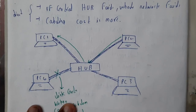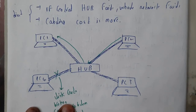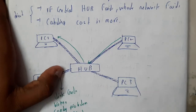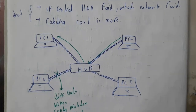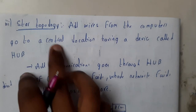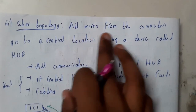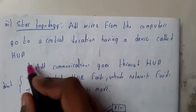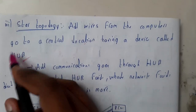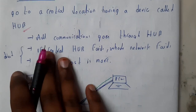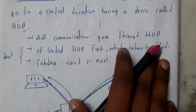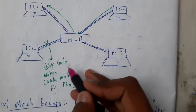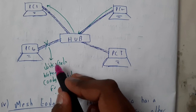Now let us go through star topology. By observing the diagram alone, you can see the best advantage: if a single connection is lost, there is no issue — the other connections keep working and only that particular system loses its connection. In star topology, all wires from the computers go through a central device called a hub. We will discuss the hub in detail later.